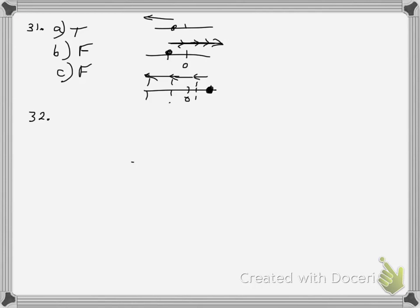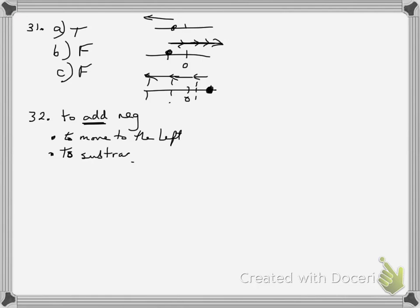Number 32: adding a negative number to another number is the same as what operation? To add a negative is to move to the left on the number line. It is also the same as subtracting — the opposite operation, to subtract a positive. That's going to be talked about more in the next section. To add a negative is the same as to subtract a positive.